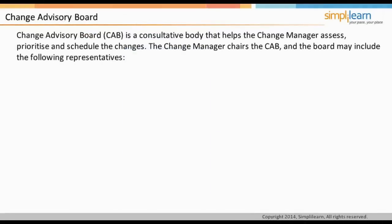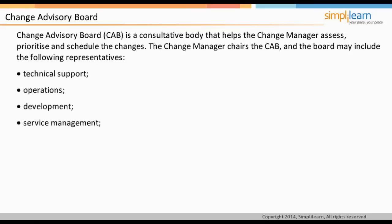The Change Advisory Board (CAB) is a consultative body that regularly meets to help the change manager assess, prioritize, and schedule changes. The CAB is a group of experts with a clear understanding across the whole range of stakeholder needs. The Change Manager chairs the CAB, and the board may include representatives from all areas within the IT service provider such as technical support, operations, development, service management, customers, other stakeholders, and third parties such as suppliers. In short, people who are directly or indirectly affected by changes should be part of the CAB.